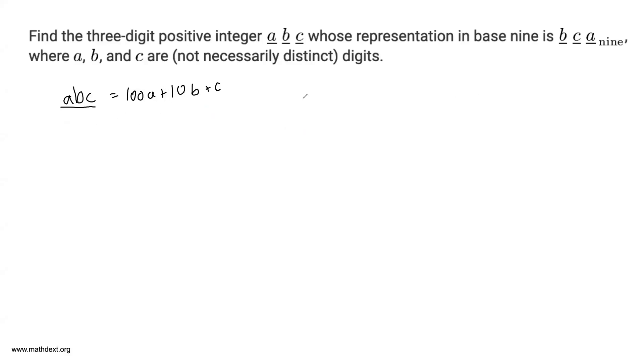And we know that the base 9 representation is BCA base 9. What does that mean? It means that you have, well, you have 81B plus 9C plus A. That's what it means in base 9.